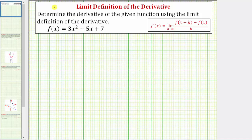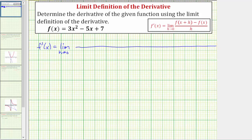So using the given function f of x, we'll have f prime of x equals the limit as h approaches zero of our difference quotient. Looking at the numerator, we want to find f of the quantity x plus h. Notice x plus h is the input into the function f, so wherever we see an x, we'll substitute the quantity x plus h.